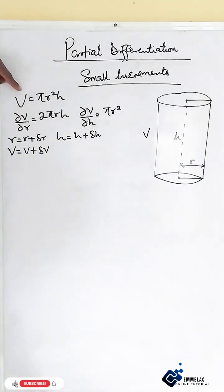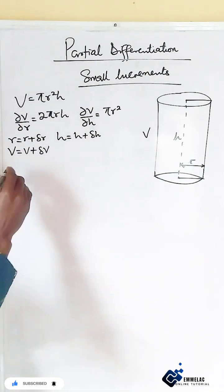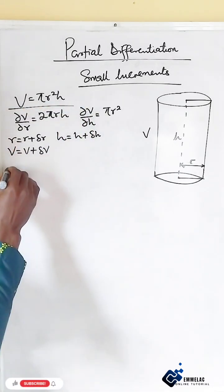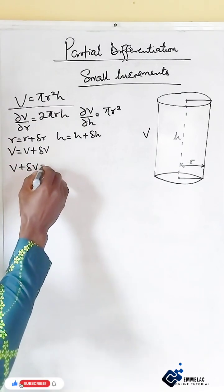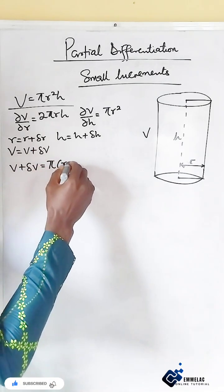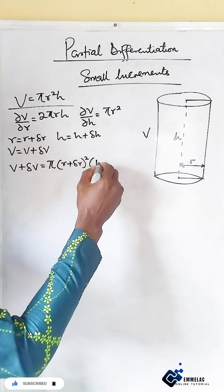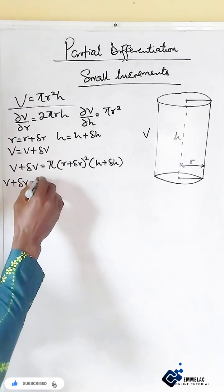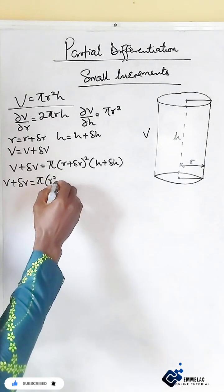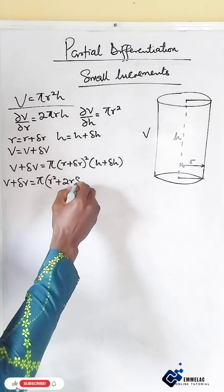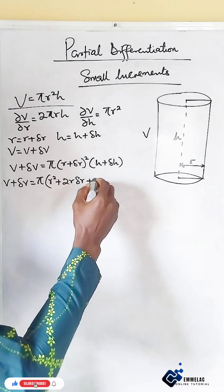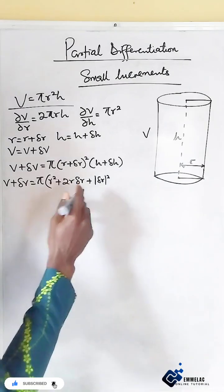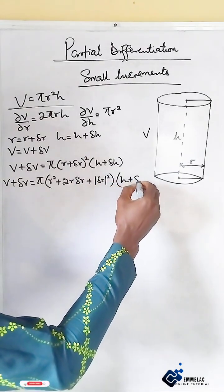Now let us introduce the small increment into this equation. It implies that our equation will become: V + δV = π(r + δr)² × (h + δh). And by using expansion here, we have V + δV = π(r² + 2r·δr + ...) × (h + δh).